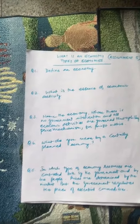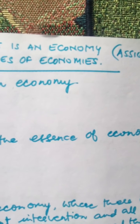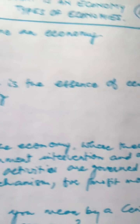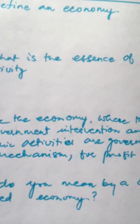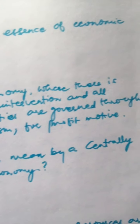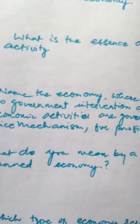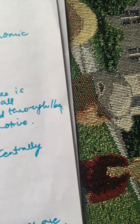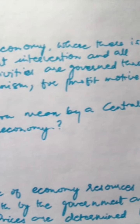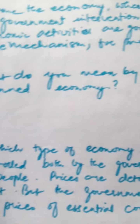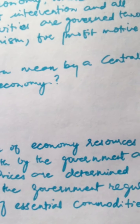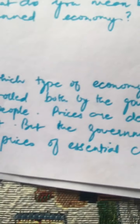Assignment Number Five: Question 1 — Define an economy. Question 2 — What is the essence of economic activity? Question 3 — Name the economy where there is no government intervention and all economic activities are governed by price mechanism and profit motive. Question 4 — What do you mean by a centrally planned economy? Question 5 — In which type of economy are resources controlled both by the government and by the people, and prices are determined by the market but the government regulates prices of essential commodities?